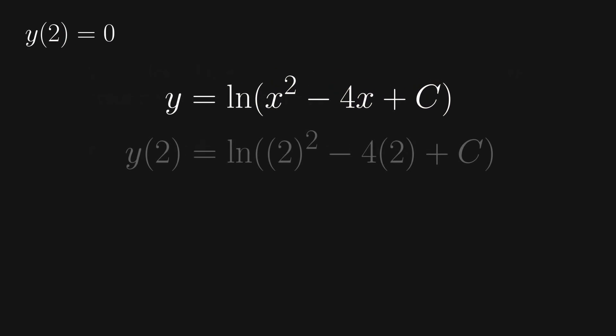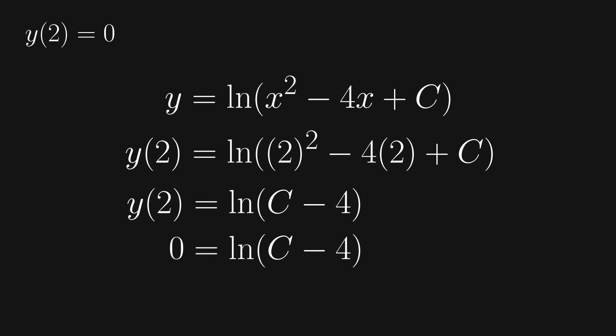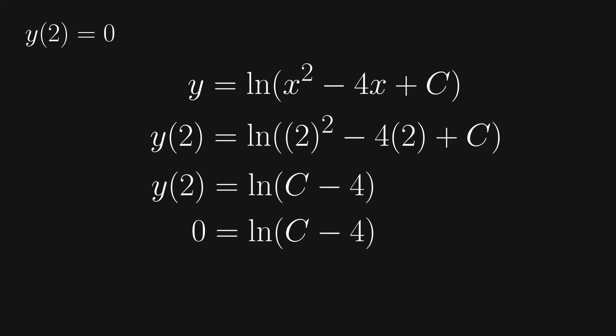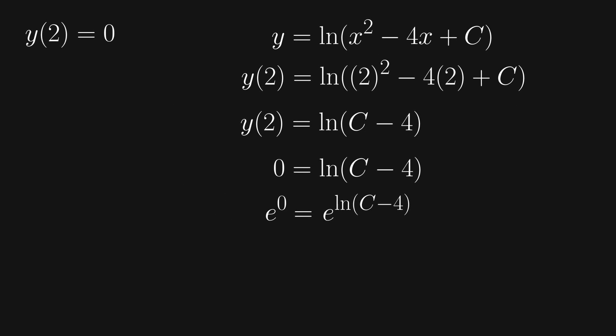We'll start by plugging 2 in for x. y of 2 equals the natural log of 2 squared minus 4 times 2 plus c, which simplifies to the natural log of c minus 4. Our initial condition tells us that c minus 4 is equal to 0. We can raise both sides to the power of e to cancel out a natural log, and we'll see that c minus 4 equals 1, so c must equal 5.